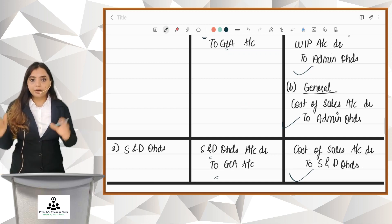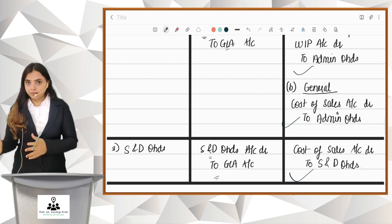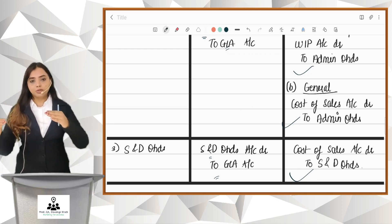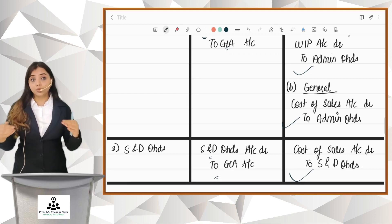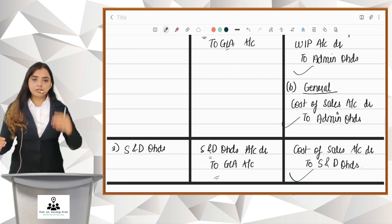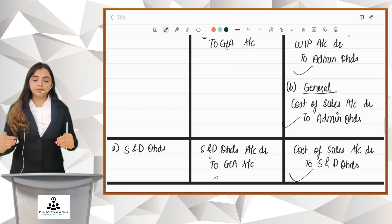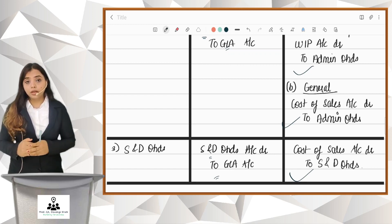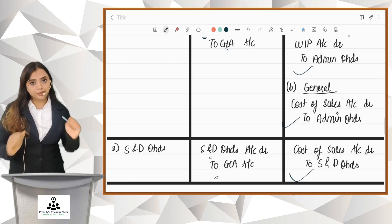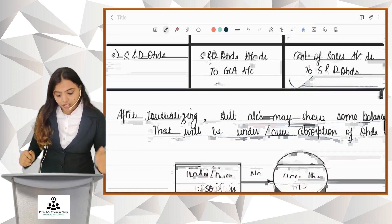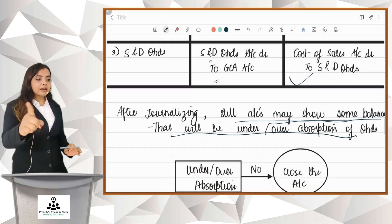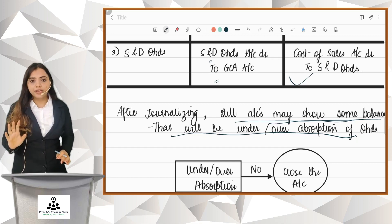This is how we record the actual and absorbed amounts. After journalizing actual and absorbed, there can be a difference between the two. Actual comes on the debit side and absorbed comes on the credit side. The difference between actual and absorbed is your under or over absorption. After journalizing, the account may still show some balance — that will be the under or over absorption of overheads.